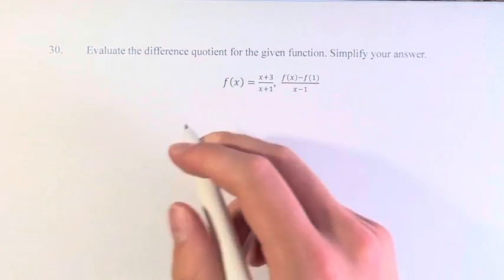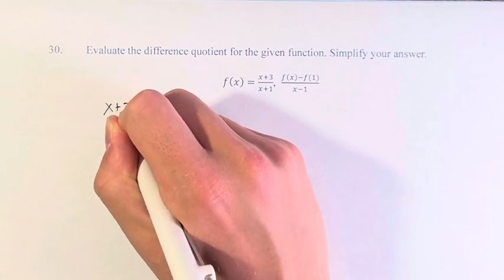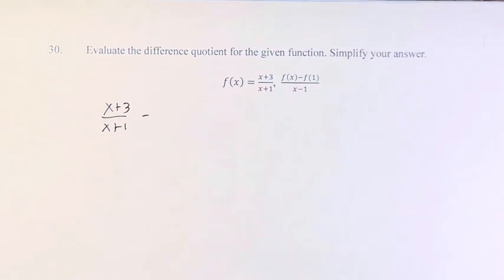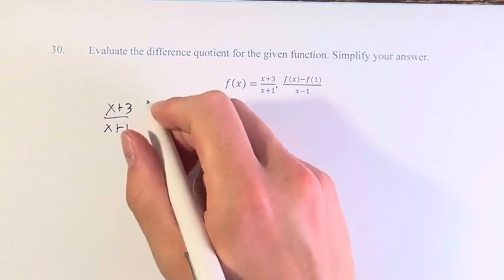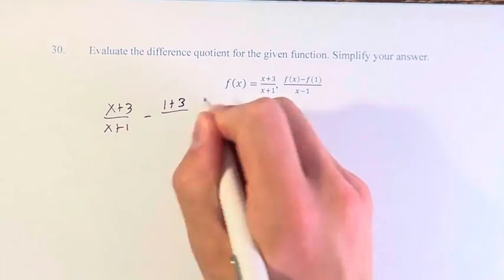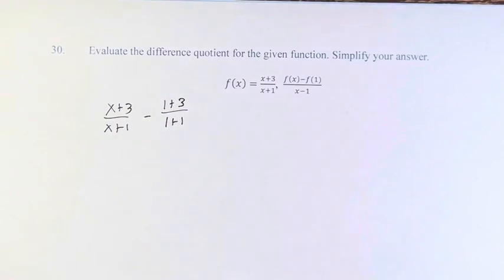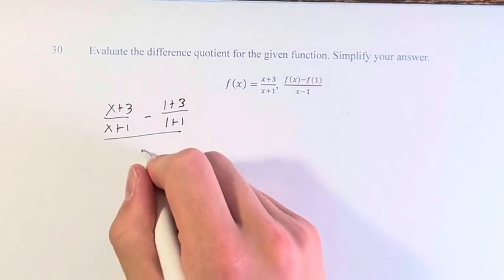So what we're going to do is take f of x, x plus 3 over x plus 1, and we're going to subtract f of 1, which means we just have to plug in 1 wherever we see x: 1 plus 3 over 1 plus 1, and this is over x minus 1.